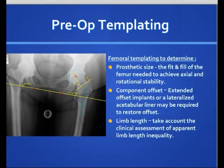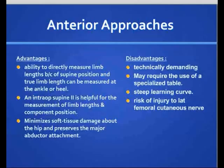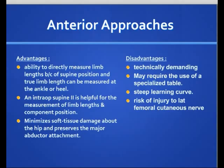Regarding surgical approaches, for the anterior approach, the advantage is that you can directly measure the limb length because the patient is in the supine position, allowing measurement of the true limb length. The intraoperative image intensifier can be used to measure limb length and check component position. This approach also minimizes soft tissue damage around the hip and preserves the abductors' attachment. However, this approach is technically demanding, may require a special table, and has a steep learning curve. There is also a risk to the lateral femoral cutaneous nerve.